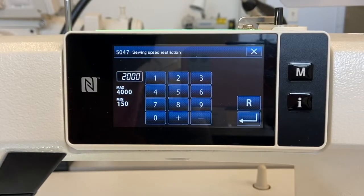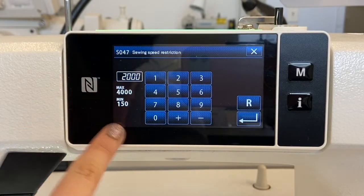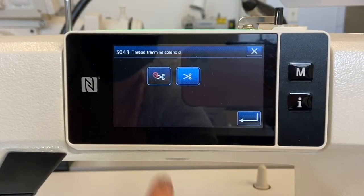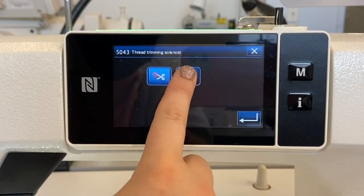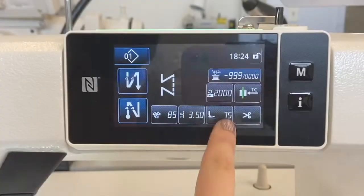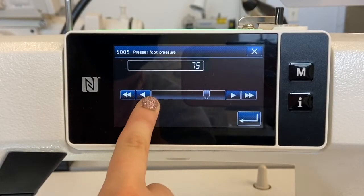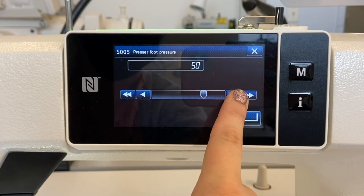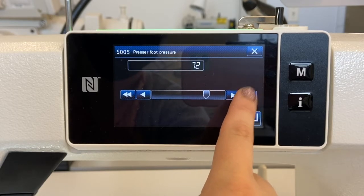The sewing speed can also be adjusted, as well as the option to turn on or off the automatic thread trimming at the end of a seam. The presser foot pressure can also be adjusted to accommodate different thicknesses of fabric, ensuring a more balanced stitch and smooth seam.